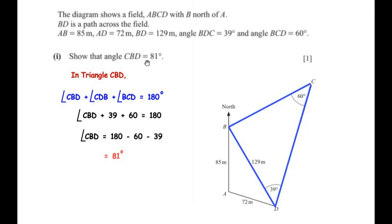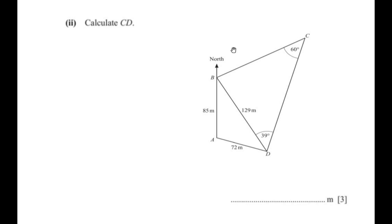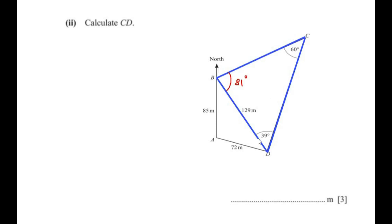We have shown that angle CBD = 81 degrees. Now moving on to the next part: calculate CD. Considering the same figure for easy reference, to find the length of CD we again use triangle CBD, where angle B is 81 degrees.